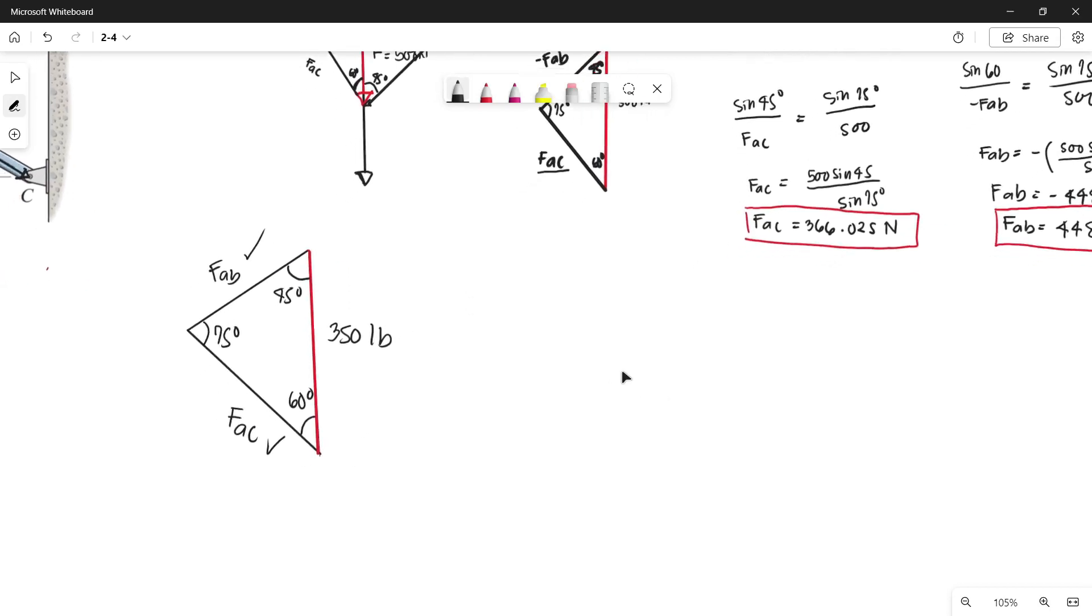Now we can use the law of sine. Let's solve first this force AB. We can use the sine of 60 degrees since this is the opposite angle of our side AB. So sine 60 over force AB is equals to sine 75 over its opposite side 350 pounds. So force AB is equals to 350 sine 60 over sine 75.